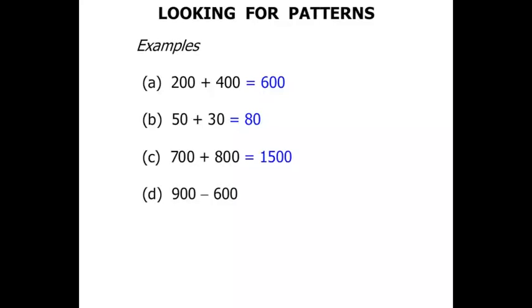Next one: some subtraction now. 900 minus 600. We're dealing with hundreds, so let's think: 9 minus 6 is 3. And what do you think? How many zeros? Did you say 2? Of course you did. So 300 is our answer there.